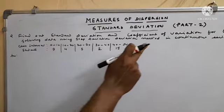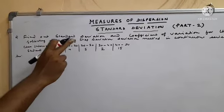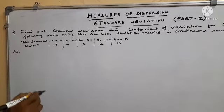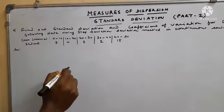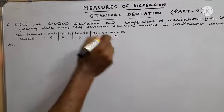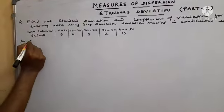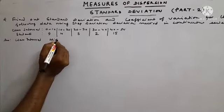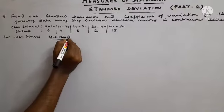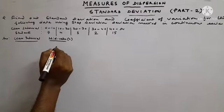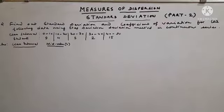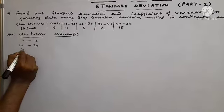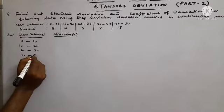Next problem: find standard deviation and Coefficient of Variation for the following data using step deviation method in continuous series. Class intervals: 0–10 frequency 9, 10–20 frequency 4, 20–30 frequency 5, 30–40 frequency 2, 40–50 frequency 15.